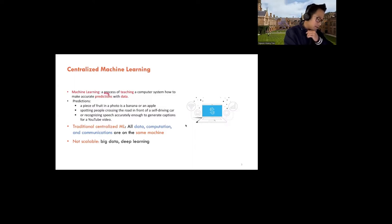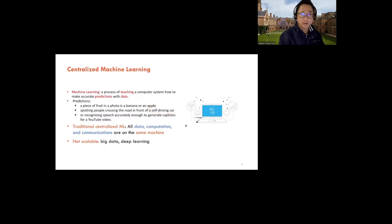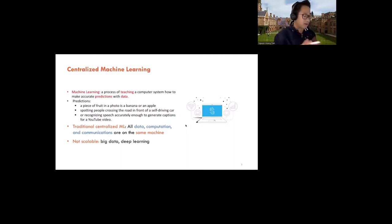There are keywords like prediction, data, and computer system. Some examples of predictions: suppose you have a piece of fruit in a photo — how can the computer predict whether that object is a banana or an apple? Or suppose you are driving your Tesla on the street, and with a new software update, the Tesla with its camera and computer vision algorithm can identify people crossing the road in front of the car, helping make the decision to stop the car for passenger safety. Another example is recognizing speech accurately enough to generate captions for a video.